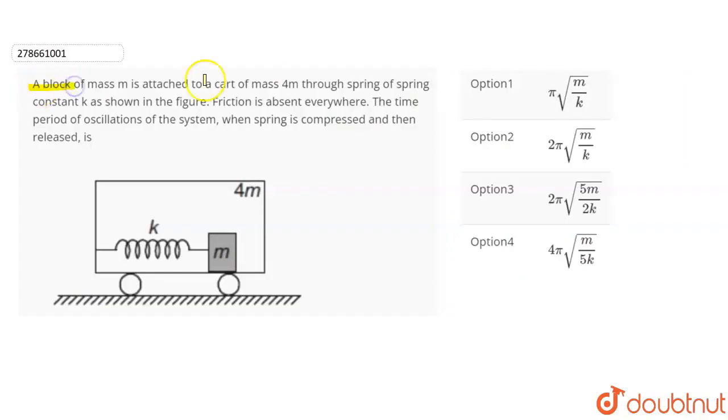In this question we have given a block of mass M attached to a cart of mass 4M through a spring of spring constant K as shown in the figure. Friction is absent everywhere. Find the time period of oscillation of the system when spring is compressed and then released.